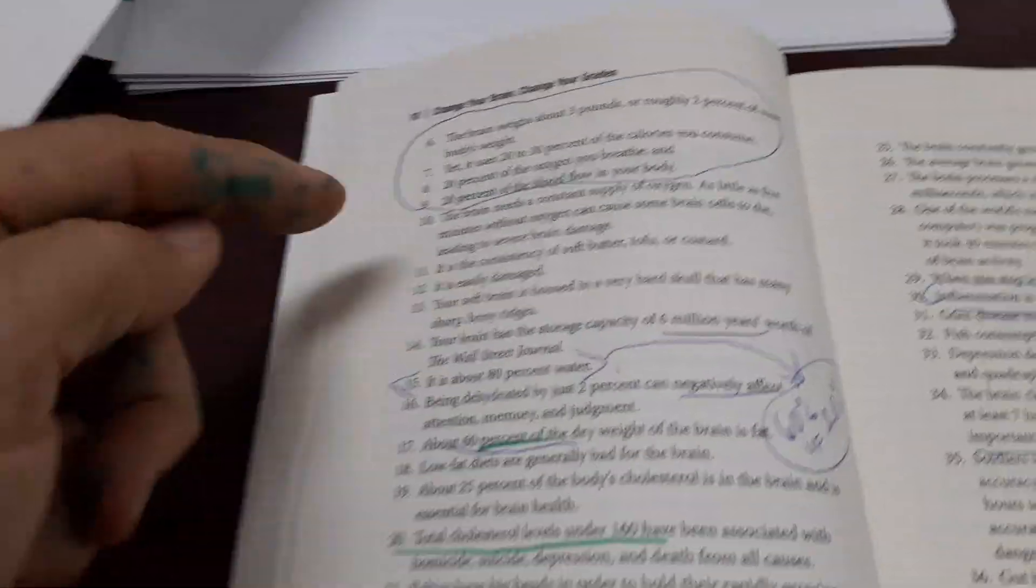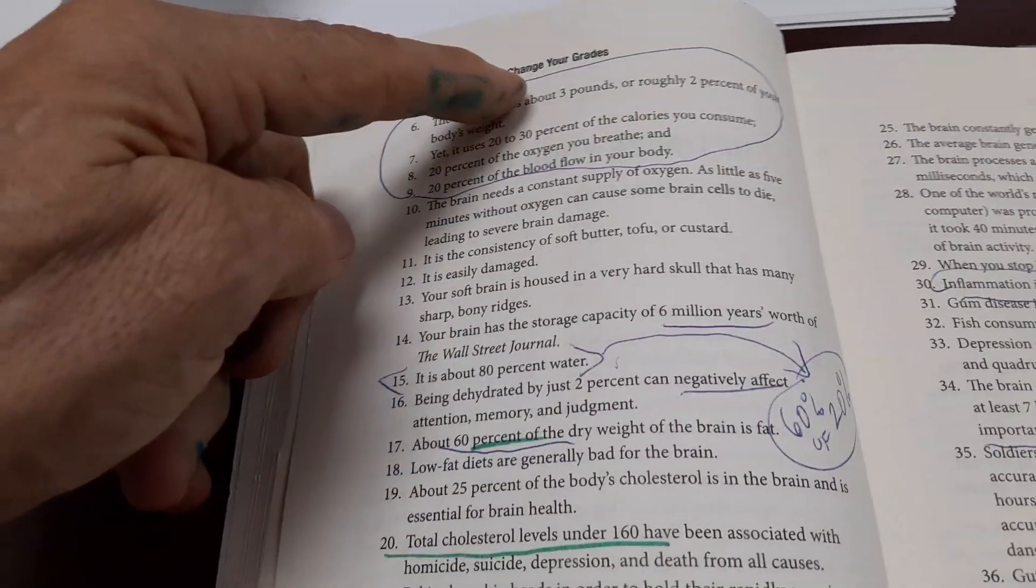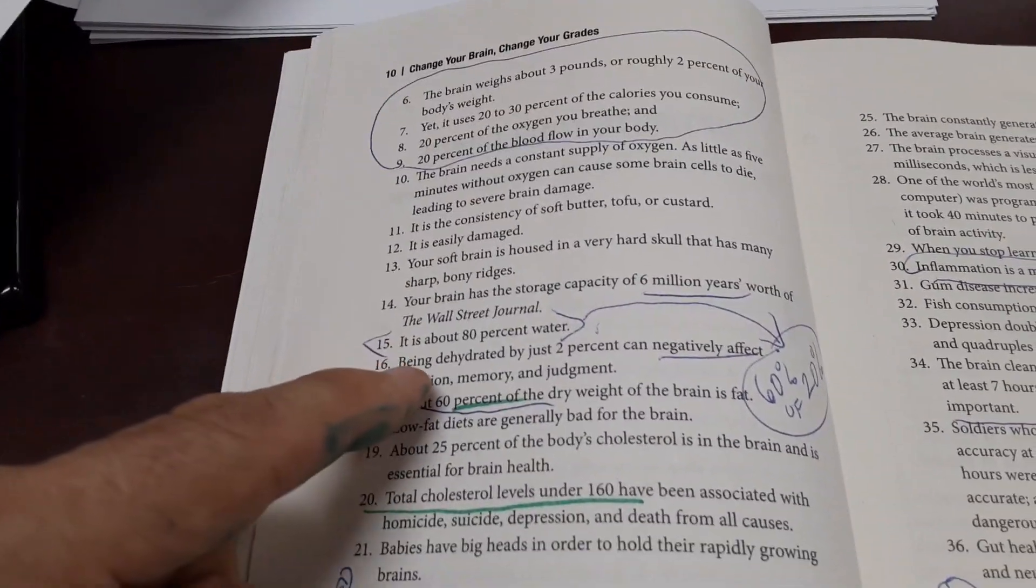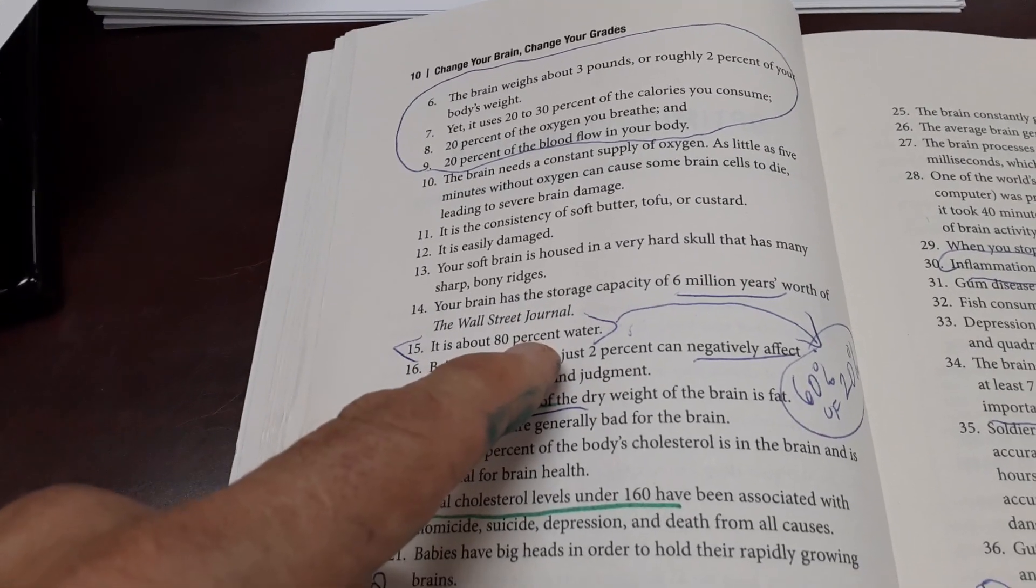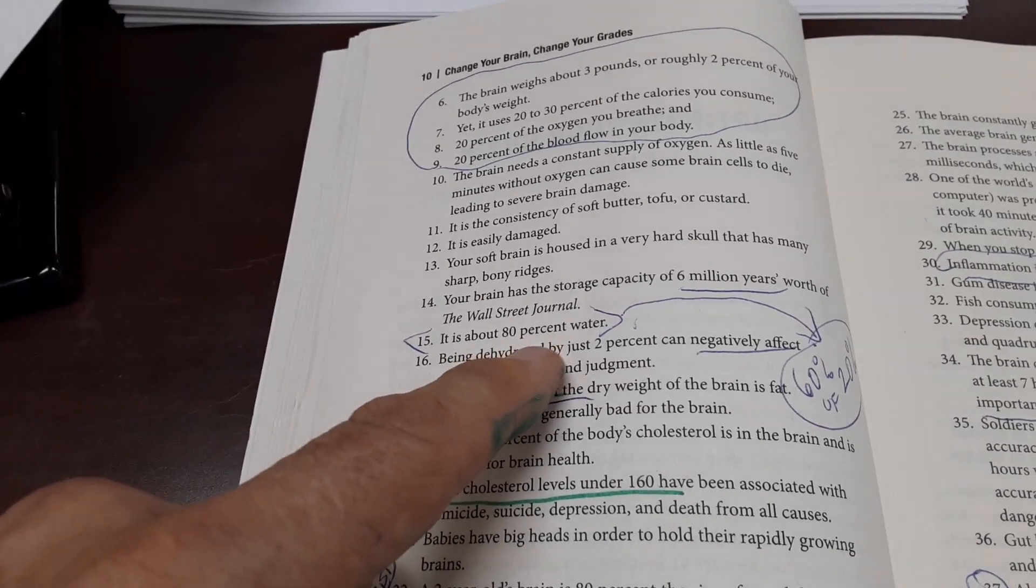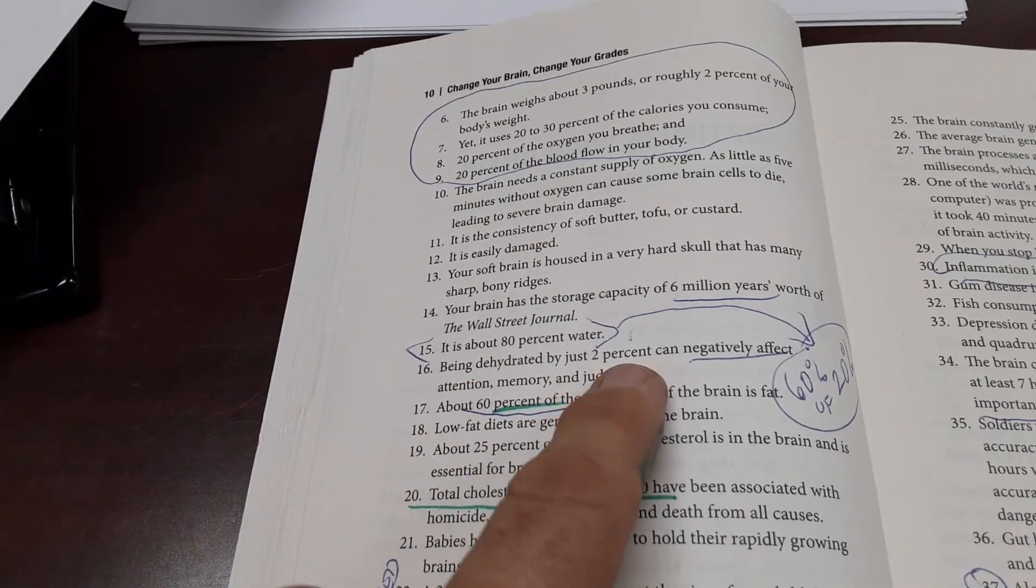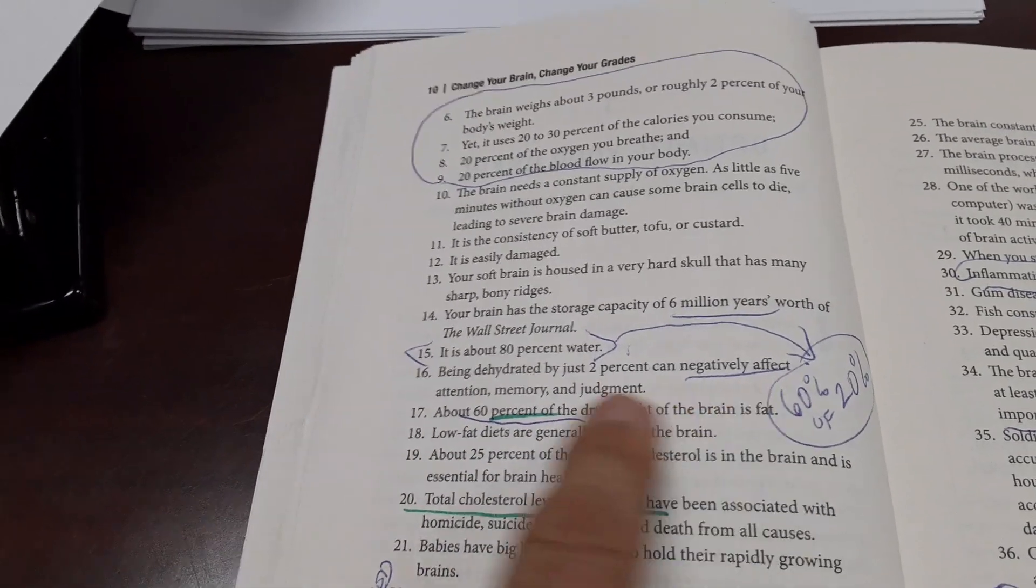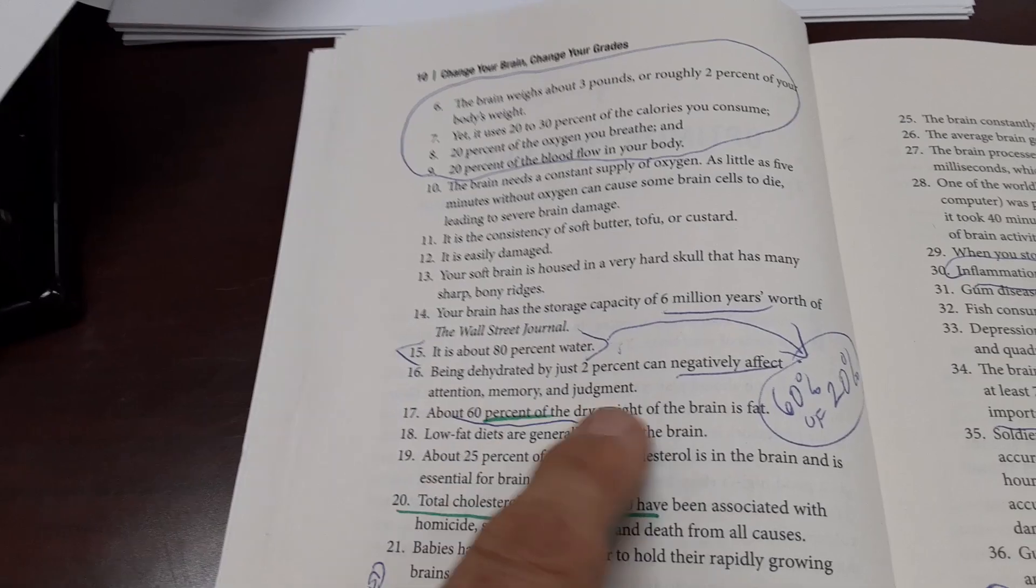One of the most important parts of Change Your Brain, Change Your Grades is that the brain is about 80 percent water, and being dehydrated just two percent will negatively affect attention, memory, and judgment.